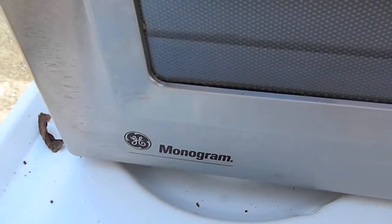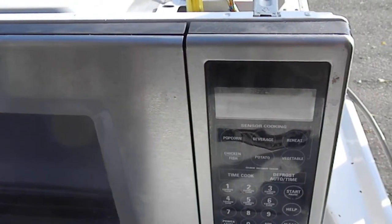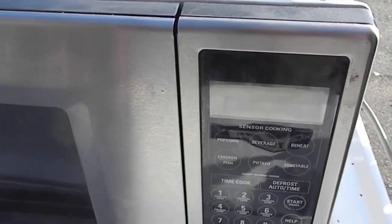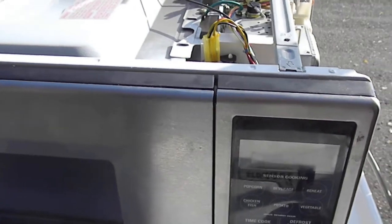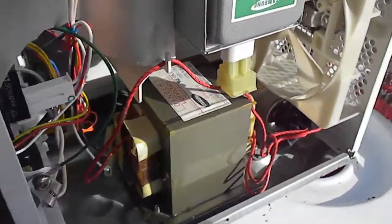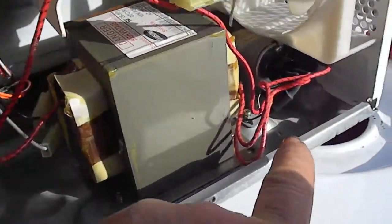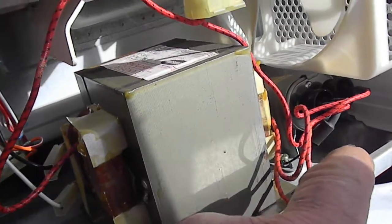Here's your typical microwave that will not cook - it's a GE Monogram. If you're working on these yourself, you have to be very careful. There's a capacitor in here, this capacitor right there, that could kick you with a deadly shock.